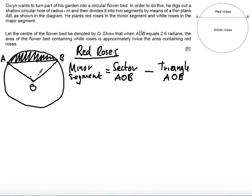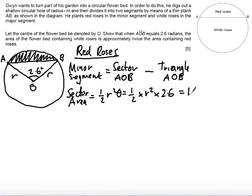Now remember in the question we're told that this angle in the middle is 2.6 radians and that the radius is just R. So I'll start off by finding the sector area. The sector area is given as half R squared theta. So I get half times R squared times 2.6, which gives me 1.3 R squared.